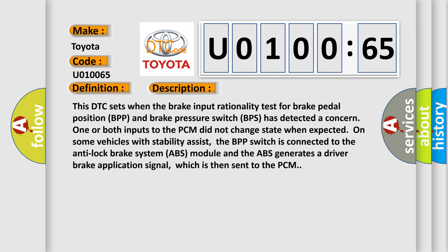This DTC sets when the brake input rationality test for brake pedal position BPP and brake pressure switch BPS has detected a concern. One or both inputs to the PCM did not change state when expected. On some vehicles with stability assist.